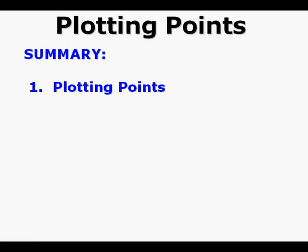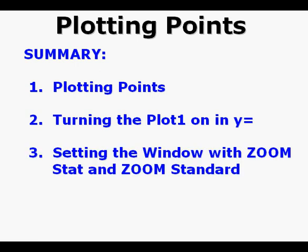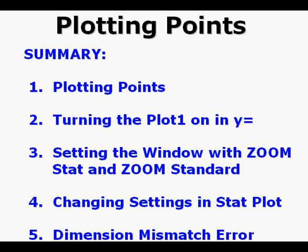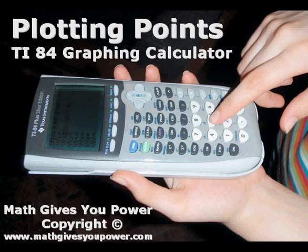Summary: In this lesson we learned about plotting points in the calculator. We learned how to turn on Plot 1 in the function editor, how to set the view screen window using ZOOM STAT and ZOOM STANDARD, and how to change settings in the STAT PLOT menu. We learned how to get and fix a dimension mismatch error, and how to recover a list that has been accidentally deleted. I invite the viewer to select any of the other four lessons covering the table set menu, setting the window, using the zoom menu, and using the calc menu. This has been plotting points on the TI-84 graphing calculator. Thanks for viewing.